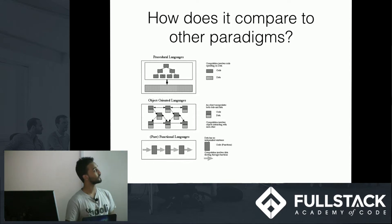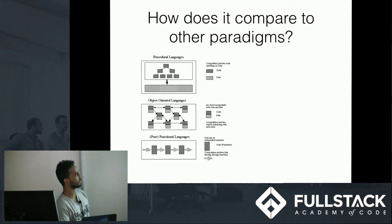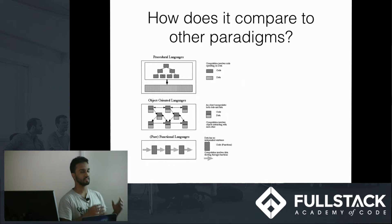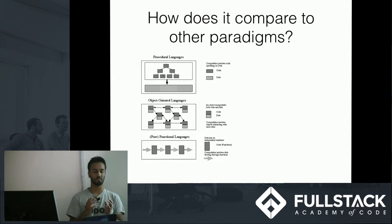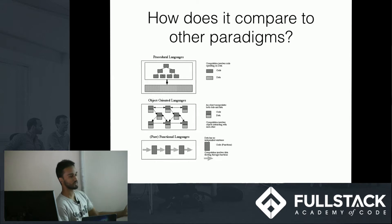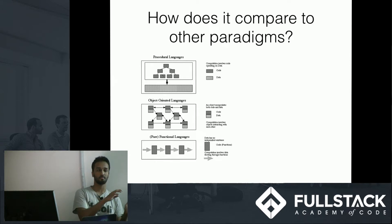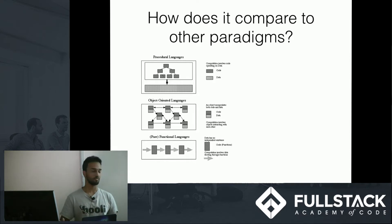I have an image here for context — a comparison of procedural languages, which just have code that operates on data; object-oriented languages like Java and Ruby, where we have encapsulation of data and code; and in a pure functional language, we just have code and the data passes through the code — through our functions.